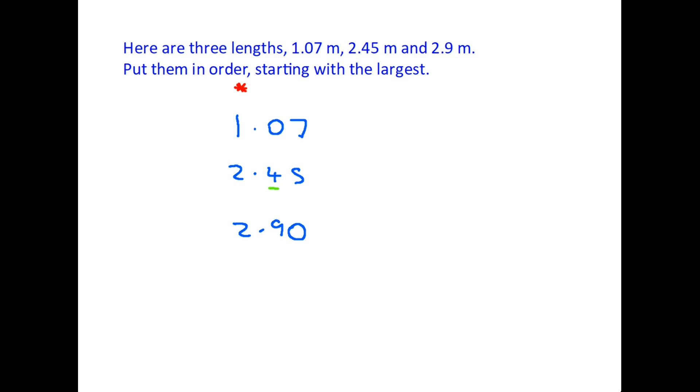To decide which of the two is largest, we move on to the next column. In this case we have 2.4 and we have 2.9. Nine is bigger than four, therefore this bottom one is the largest number. It does not matter about the five on the end here, that is a much smaller number.